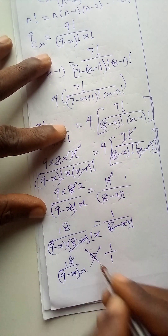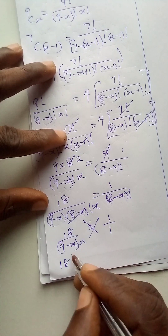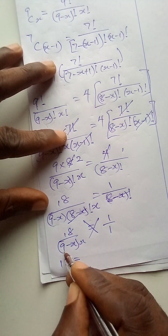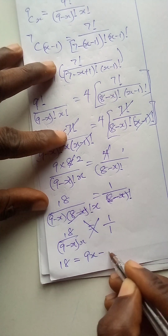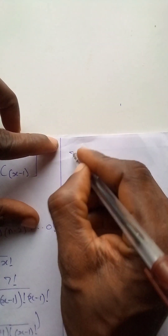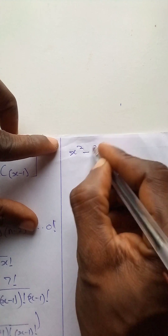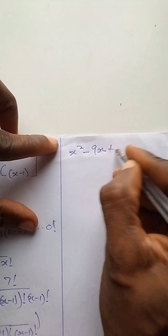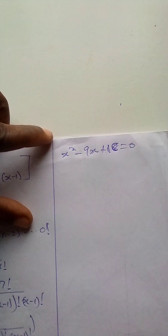We now cross-multiply. When we cross-multiply, 18 equals 9x minus x squared. Rearranging the quadratic equation, we have x squared minus 9x plus 18 equal to 0. This is the quadratic equation.